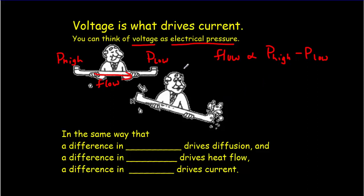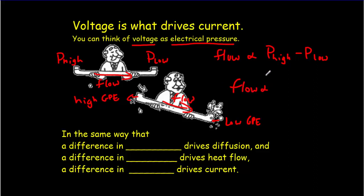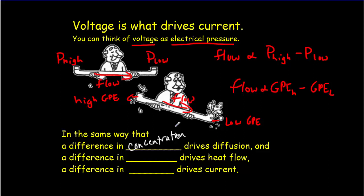Voltage is connected to energy. We could make water flow through a pipe using gravitational potential energy — high gravitational PE on one side, low on the other causes flow proportional to the difference GPE-high minus GPE-low. Any time we get a flow of something, there's always a difference in some other quantity causing it. We saw that with diffusion, where a difference in concentration drives fluid flow — for instance, high water concentration inside a cell and low outside causes water to diffuse through the membrane.